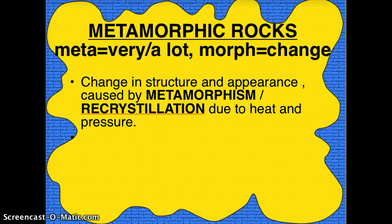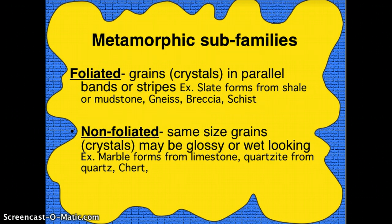The last family of rocks are metamorphic — 'meta' meaning a lot and 'morph' meaning changes. These are rocks that have undergone a lot of changes. The change happens through their structure and appearance caused by recrystallization or metamorphism. Basically, the rocks are heated and pressurized — or cooked and smushed.